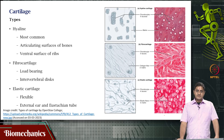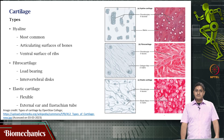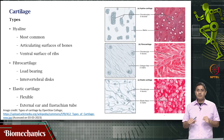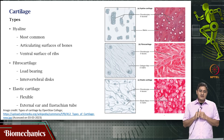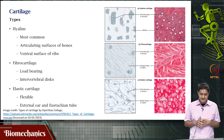Cartilage comes in various types. The most common is hyaline cartilage, which is present on the surface of bones. It is more like a coating on the bone, because when bones are pulled by muscles, they move relative to each other, and you want to minimize the amount of friction. So there is cartilage present on the articulating surfaces of bones.